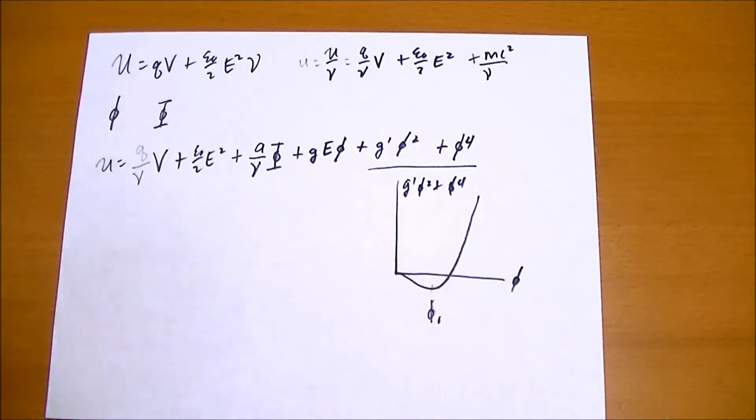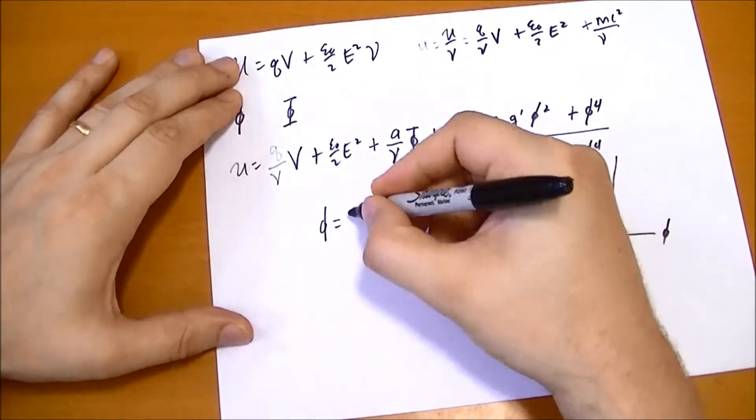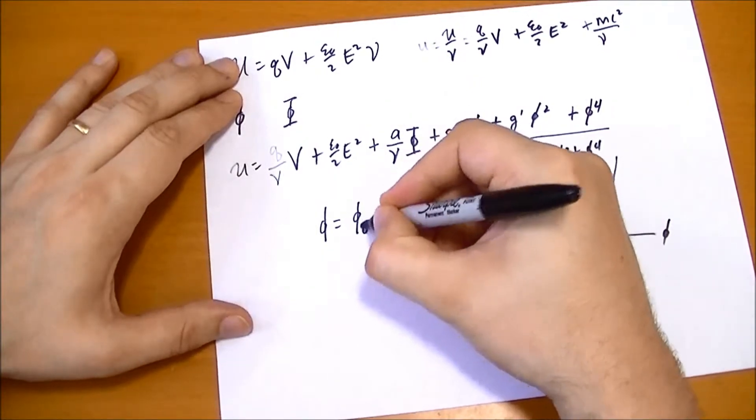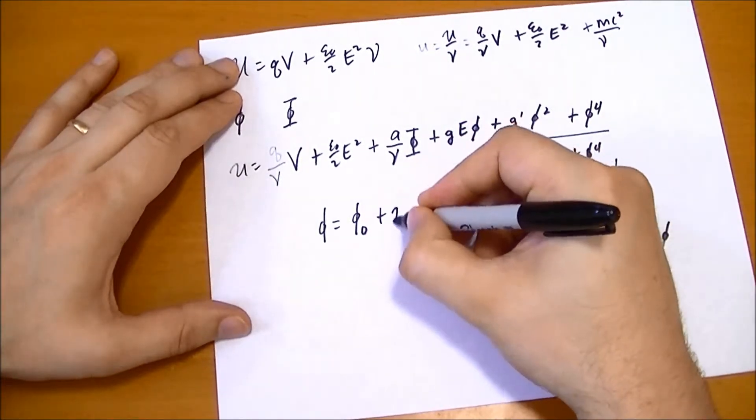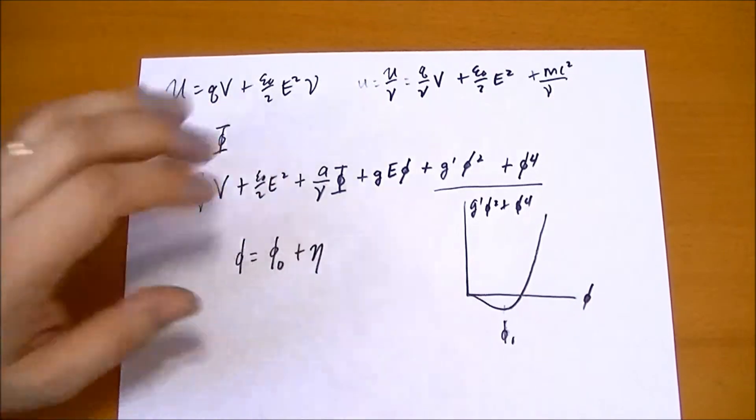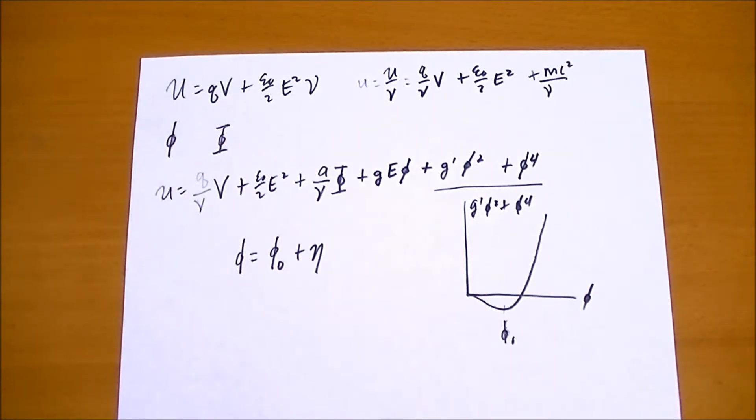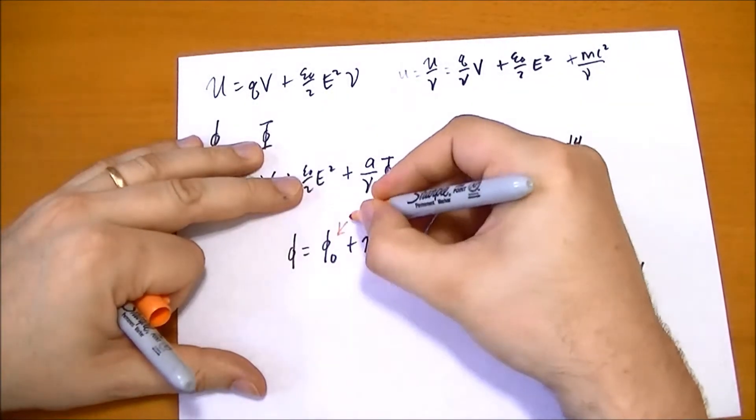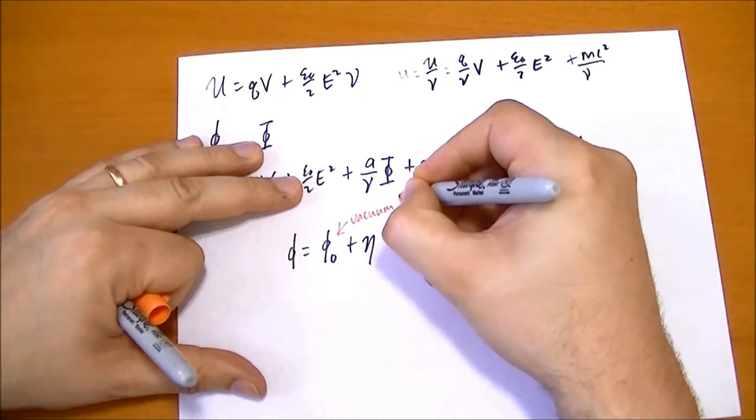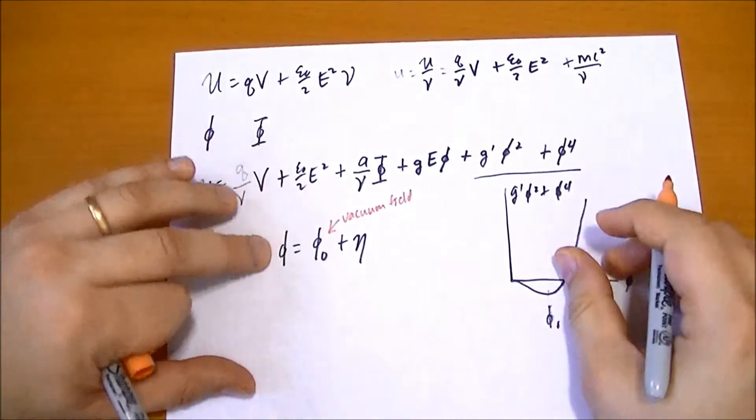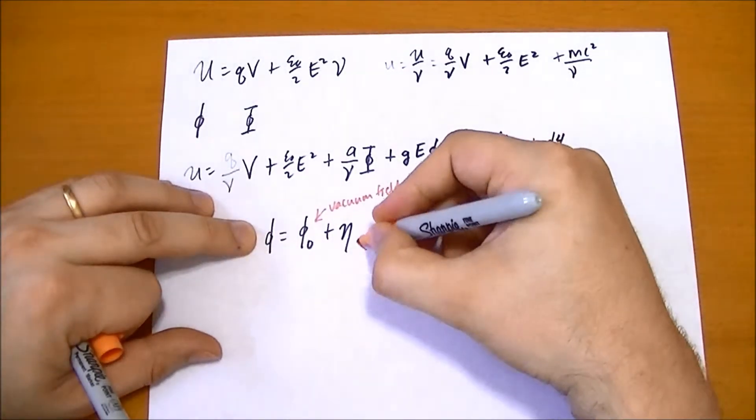We're going to break apart phi. We're going to say that's equal to the minimum energy plus this eta field. We're going to call this one the vacuum field. That's what this field does in a vacuum. And this is the Higgs field.